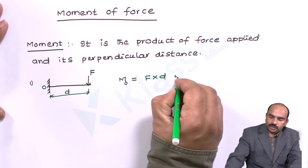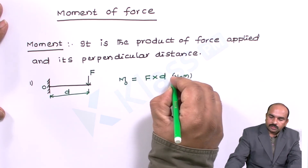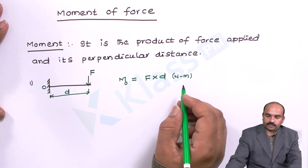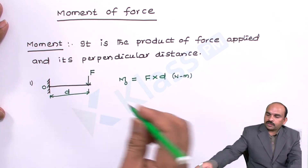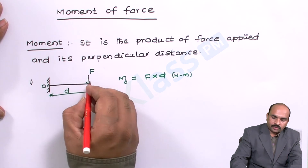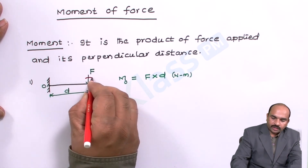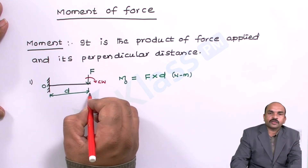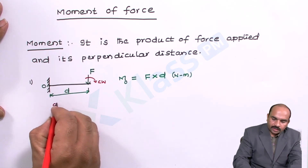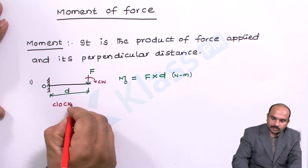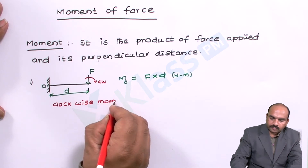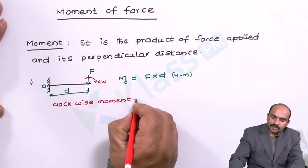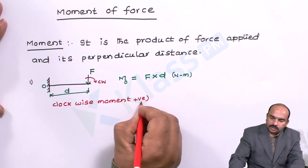We know force unit is Newton and distance unit is meter, so the units for the moment are Newton meters. Now, because of the application of this force, the body will rotate clockwise. So we call this a clockwise moment. Clockwise moment we take as a positive sign when solving problems.